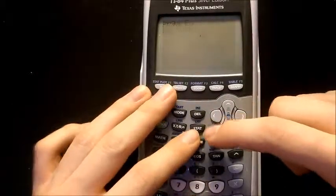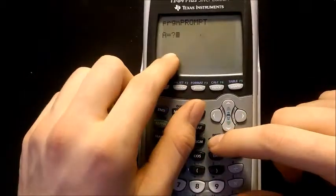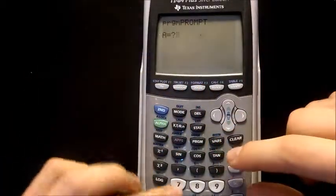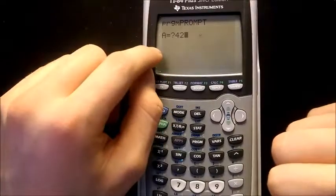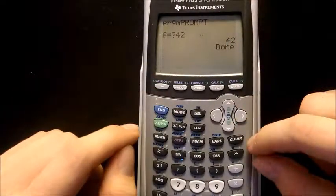So let's run this really quick. Prompt A, see it's asking for A, variable A. Let's make it 42. So then we hit enter, and then it just displays A right back out.